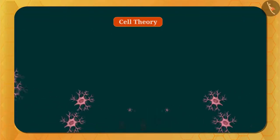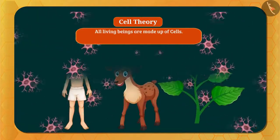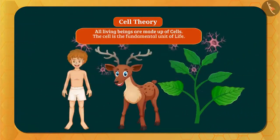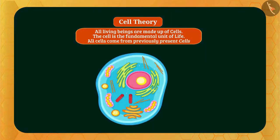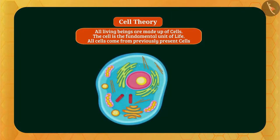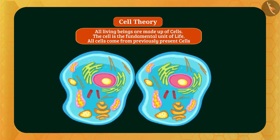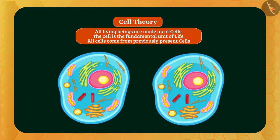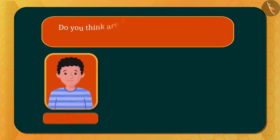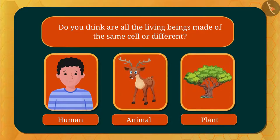So in this way, Robert Hooke discovered the cell. After further research, it was found that all living beings are made up of cells. The cell is the fundamental unit of life, and all cells come from previously present cells — that is, the first present cell divides and forms two new cells. These are the postulates of cell theory.